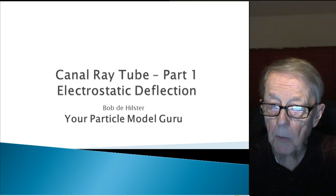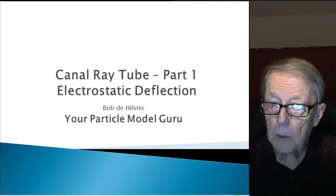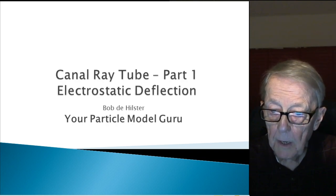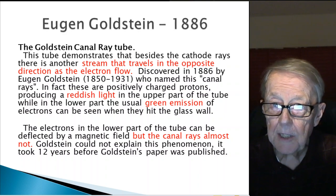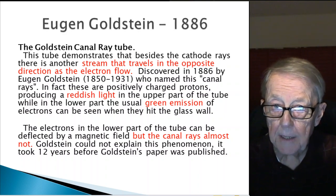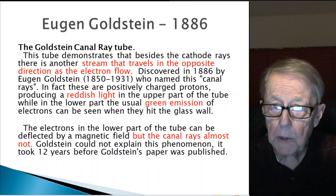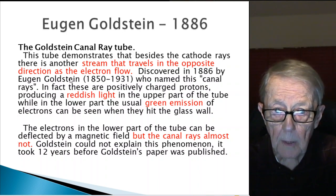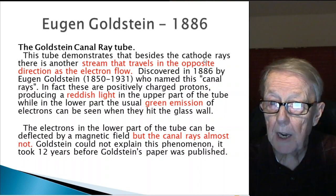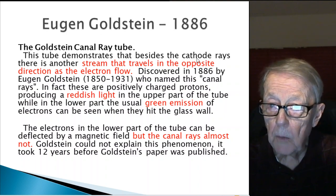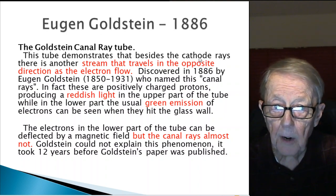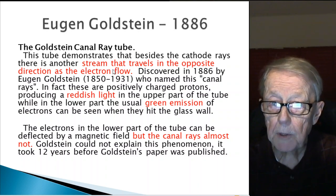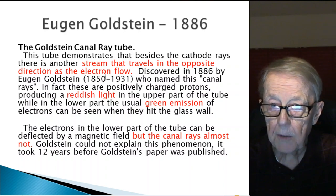This is part one and talks about the electrostatic deflection. It turns out that in 1886, Eugen Goldstein was the one who demonstrated the canal ray tube. This tube demonstrates that besides the cathode rays, which are essentially electrons, there is another stream that travels in the opposite direction from the electron flow.